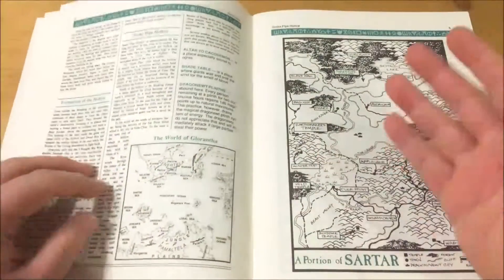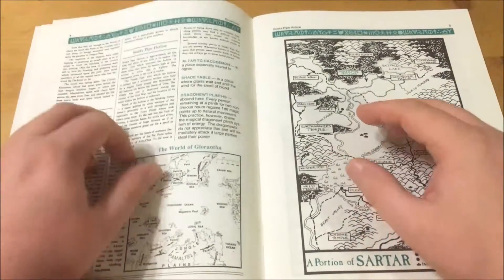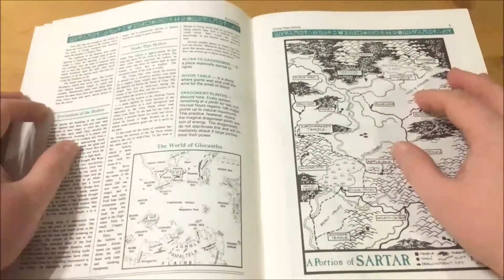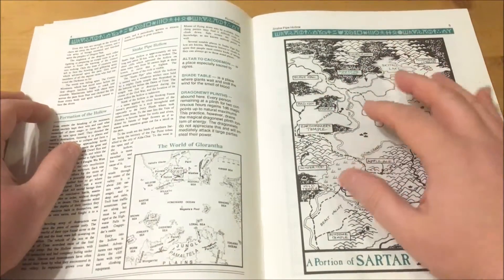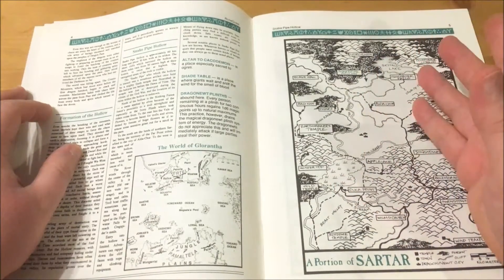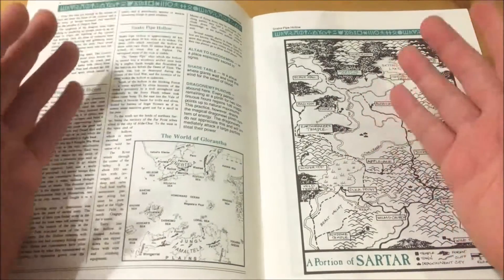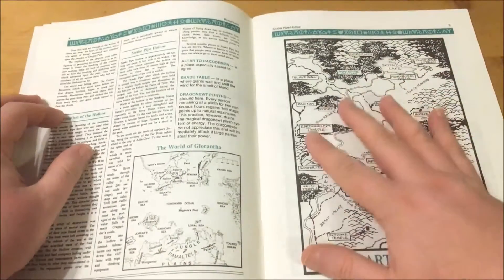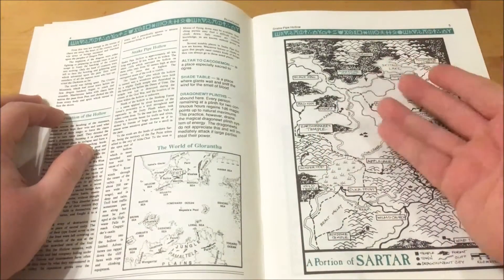Snake Pipe Hollow was formed during the I Thought We Won battle between chaos and mortals during god time, named such as nobody who took part in it recalls any details other than the fact that they won. It is named after the Snake Pipe, a wondrous artifact that was held within the Earth Temple here and that is reputed to either be lost or buried within.